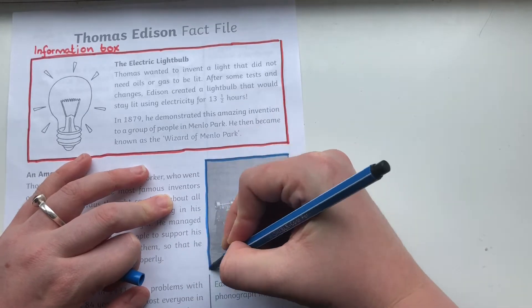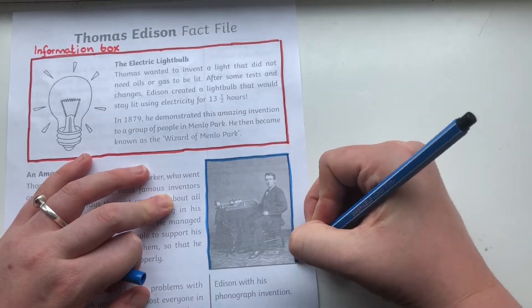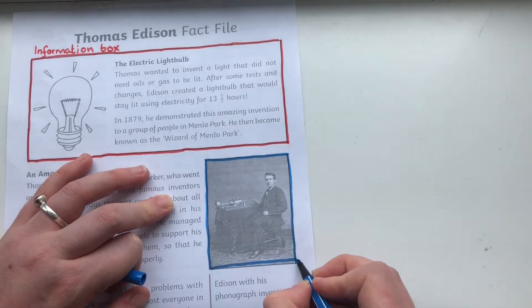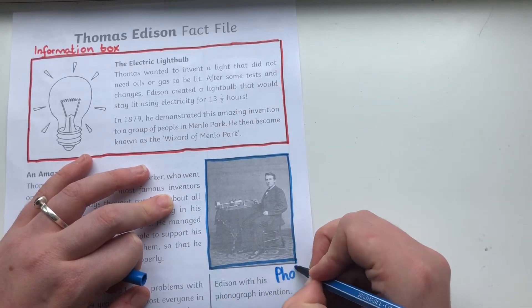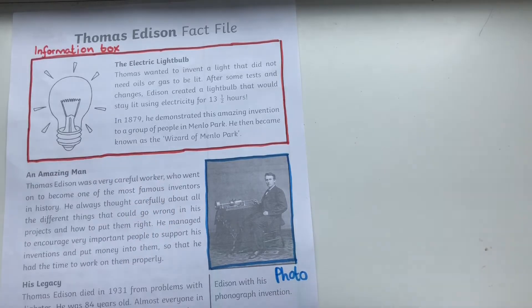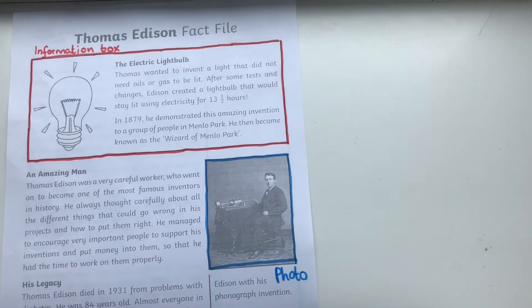So this is things like title, subheading, illustration, caption, information box — how many can your child remember?